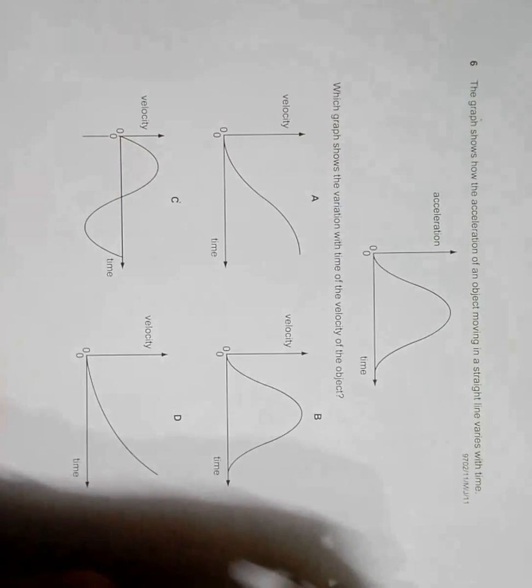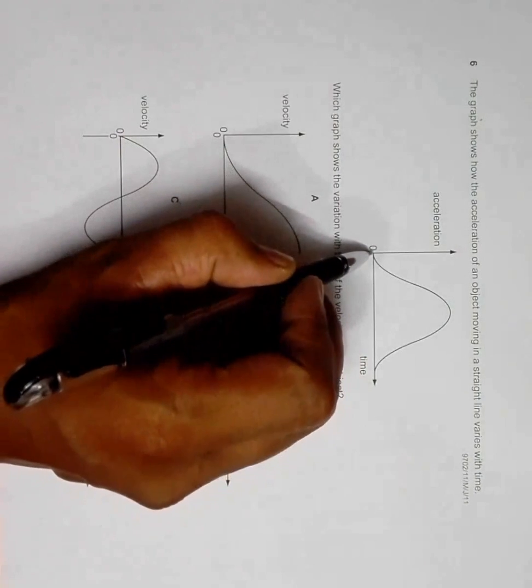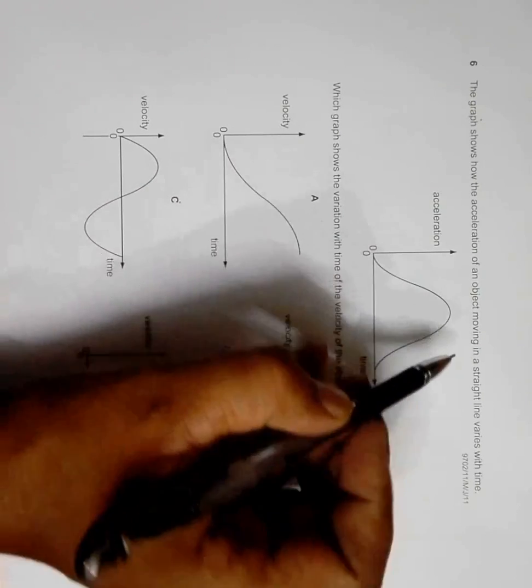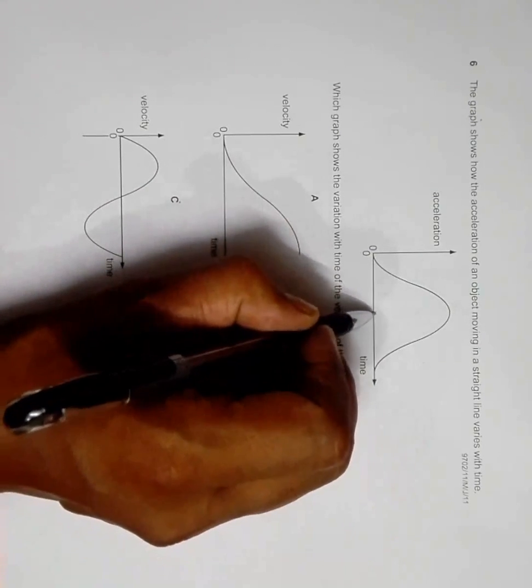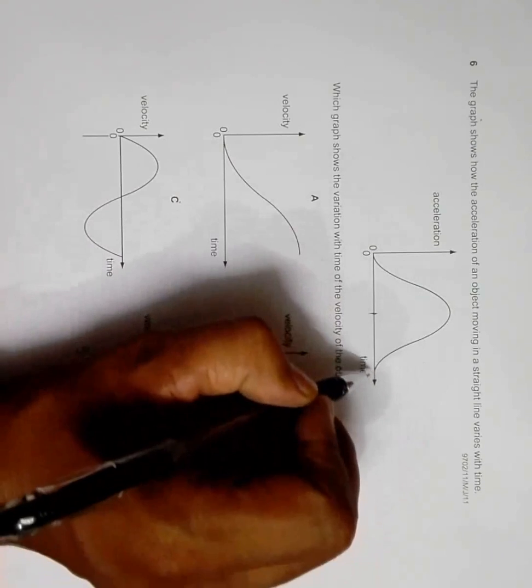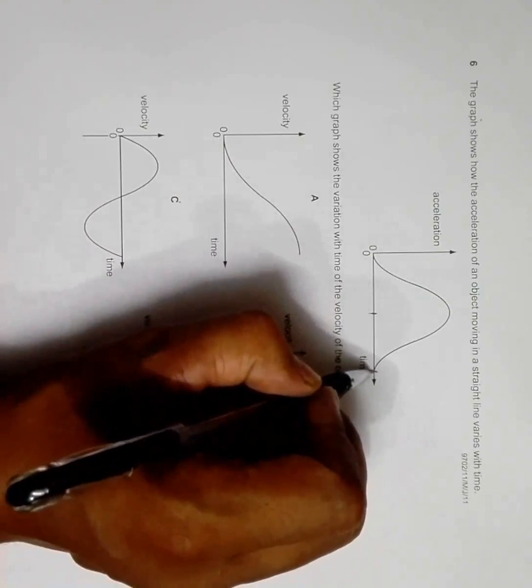This is acceleration, so initially the value is zero, the slope is zero. At half of the time the value is maximum, and at the whole time period it is again zero.